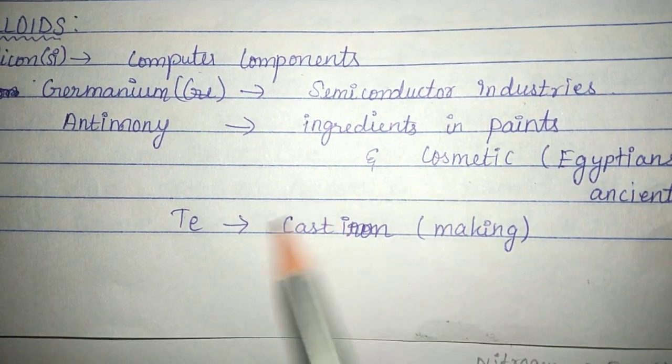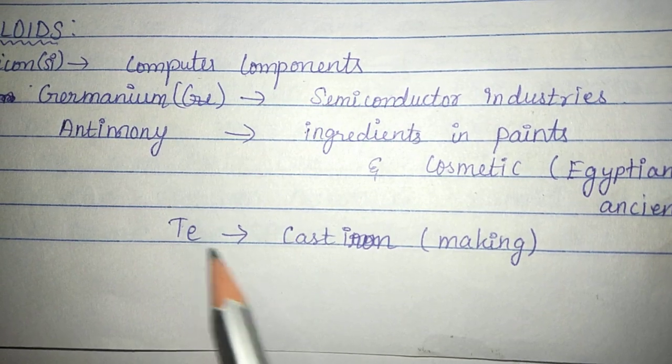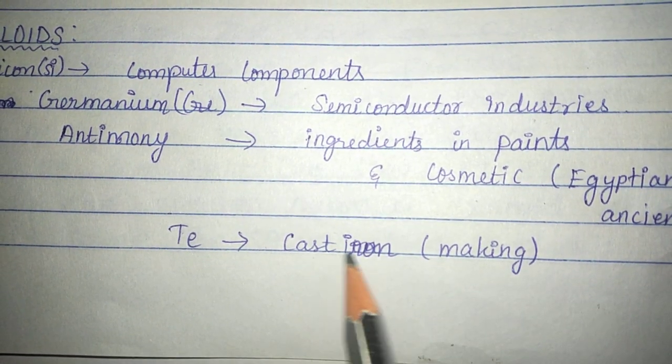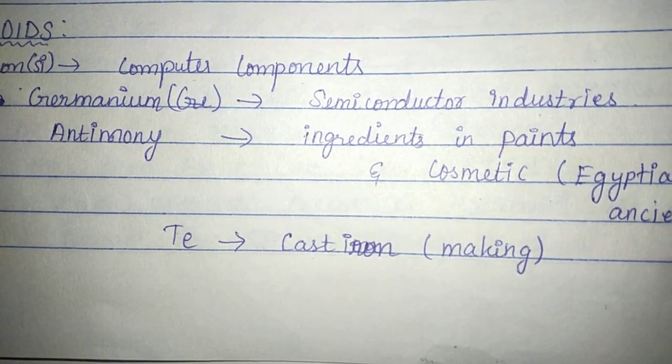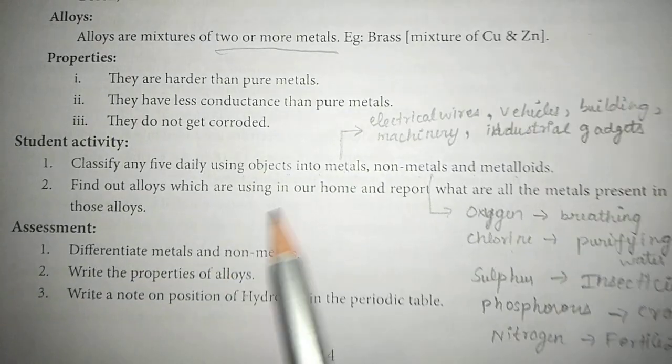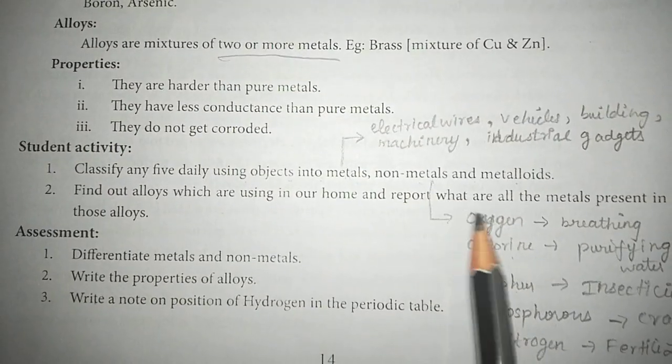And next, tellurium is useful in making casts. That completes the first student activity — all five daily-use objects have been classified into metals, non-metals, and metalloids.